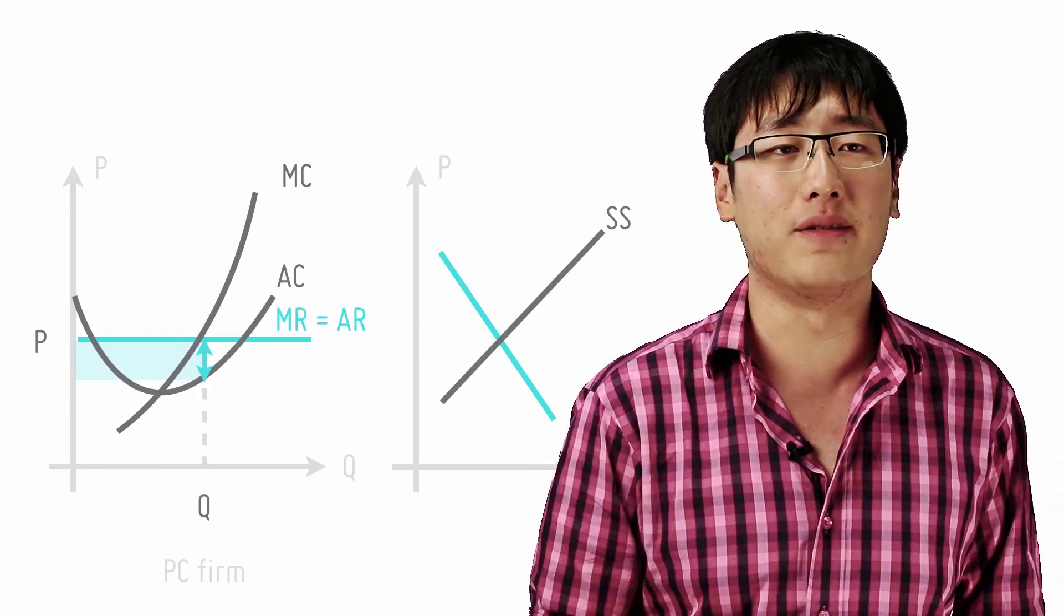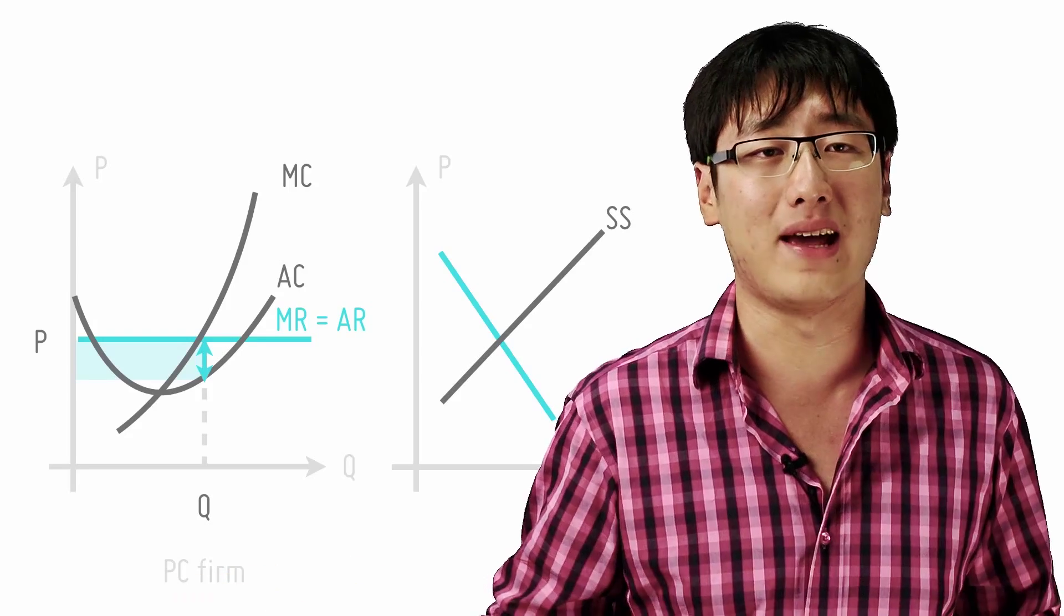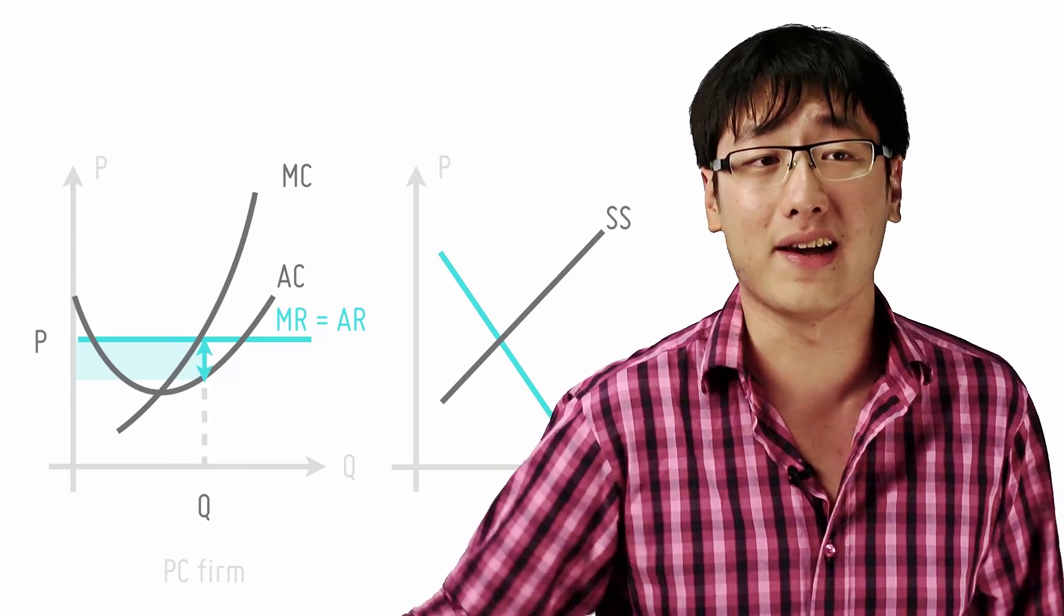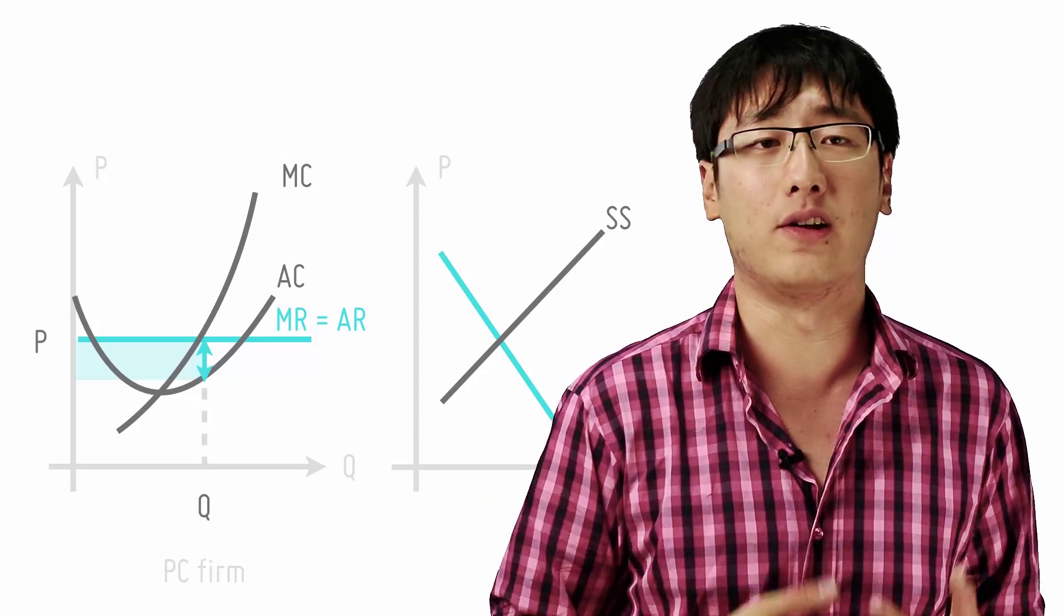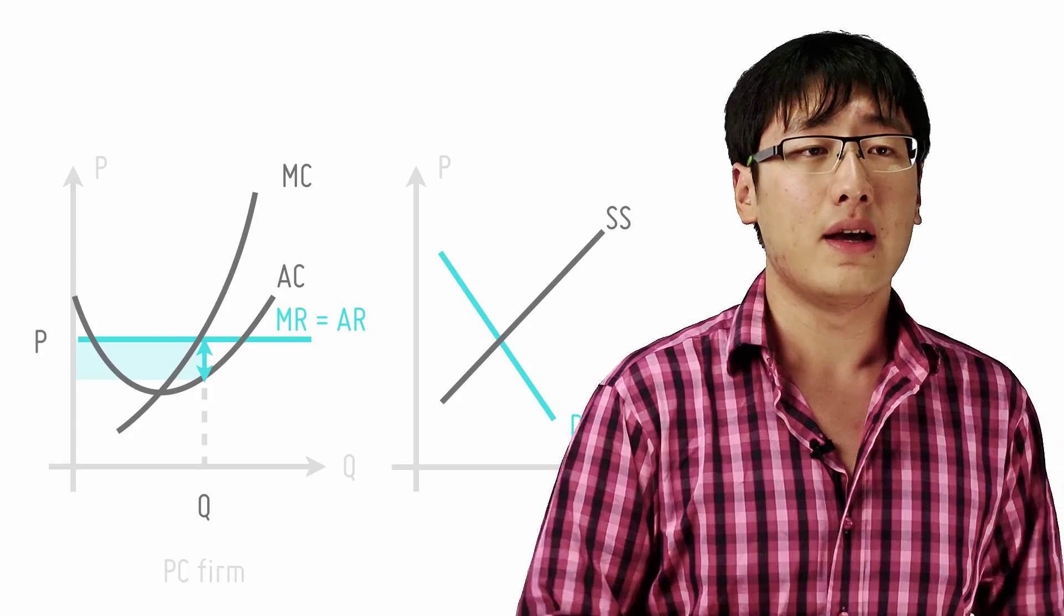And because the market is perfectly competitive, in the long run there are no barriers to entry and hence, you just step into the industry as and when you like. And that's pretty much what happens when you have perfect competition in the long run, where firms can exit and enter.